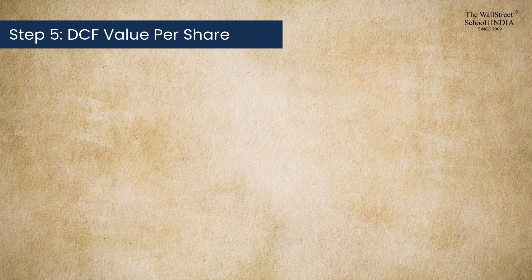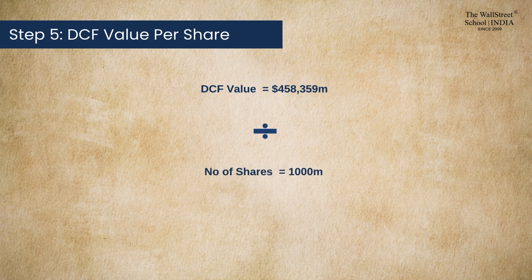In step five, we calculate the intrinsic value of the company. Sum up all the discounted cash flows, including terminal value, and divide by the number of shares outstanding to get the intrinsic value per share.